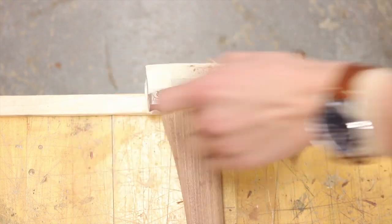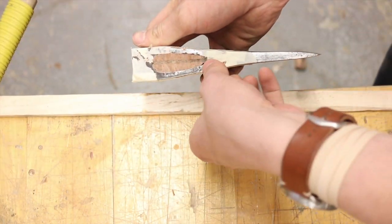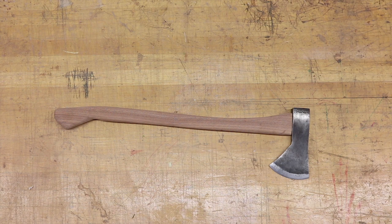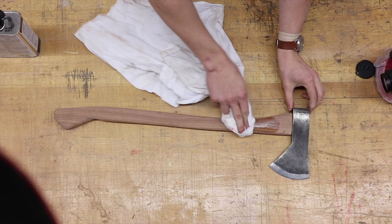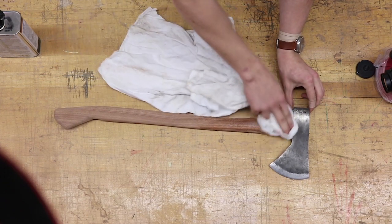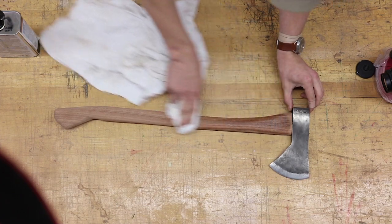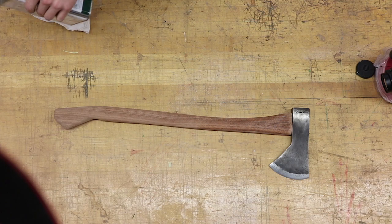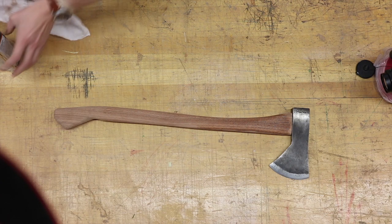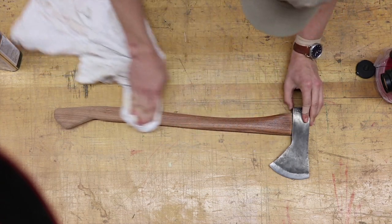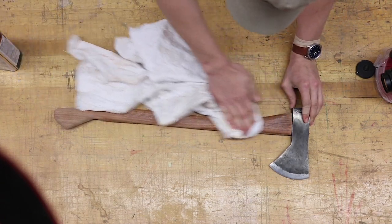I'm using that Japanese pull saw here to cut off the top. We're all done adding a little tung oil to the handle to help protect it. Once this tung oil soaks in, I'm going to come back and do another coat. All in all this project can be done in a day and bring a tool back for a whole nother lifetime worth of use.